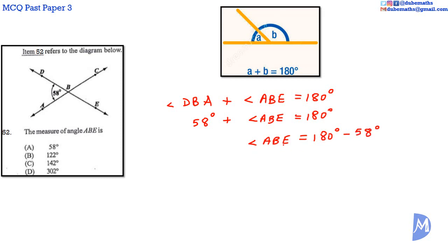Angle ABE is equal to 180 degrees minus 58 degrees. Angle ABE is equal to 122 degrees. The answer is B.